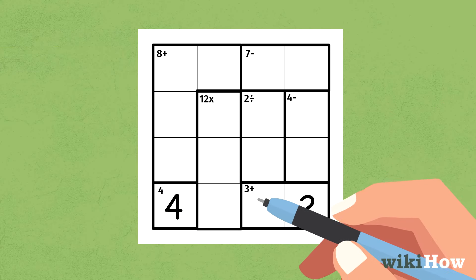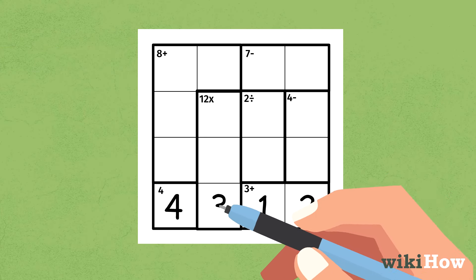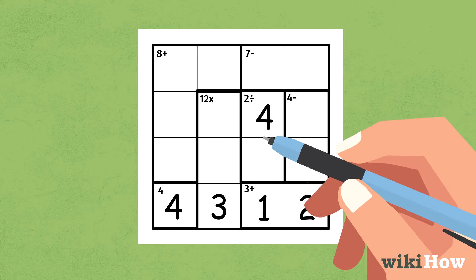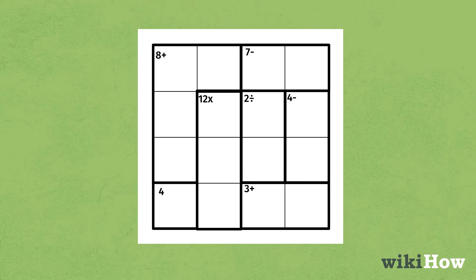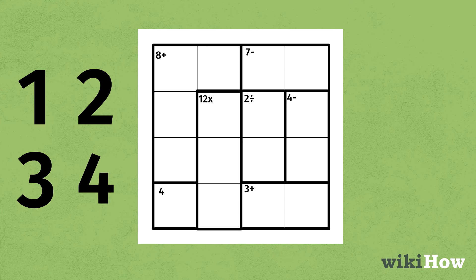KenKen is a Japanese paper puzzle where players use math skills and logic to solve the puzzle. In KenKen, you want to fill each horizontal row with numbers 1 through 4 without repeating any of them.